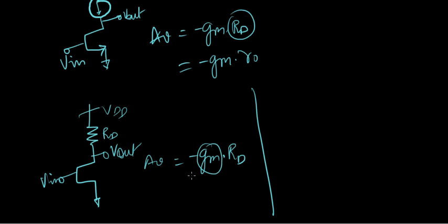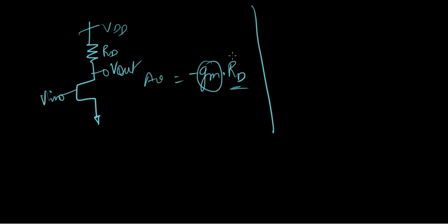Now, gm is the transconductance of the input transistor. But what about rd? What is rd exactly here? It's the impedance seen at the output node. Always remember. So the transconductance of the input transistor or input device times the impedance seen at the output node as the gain.